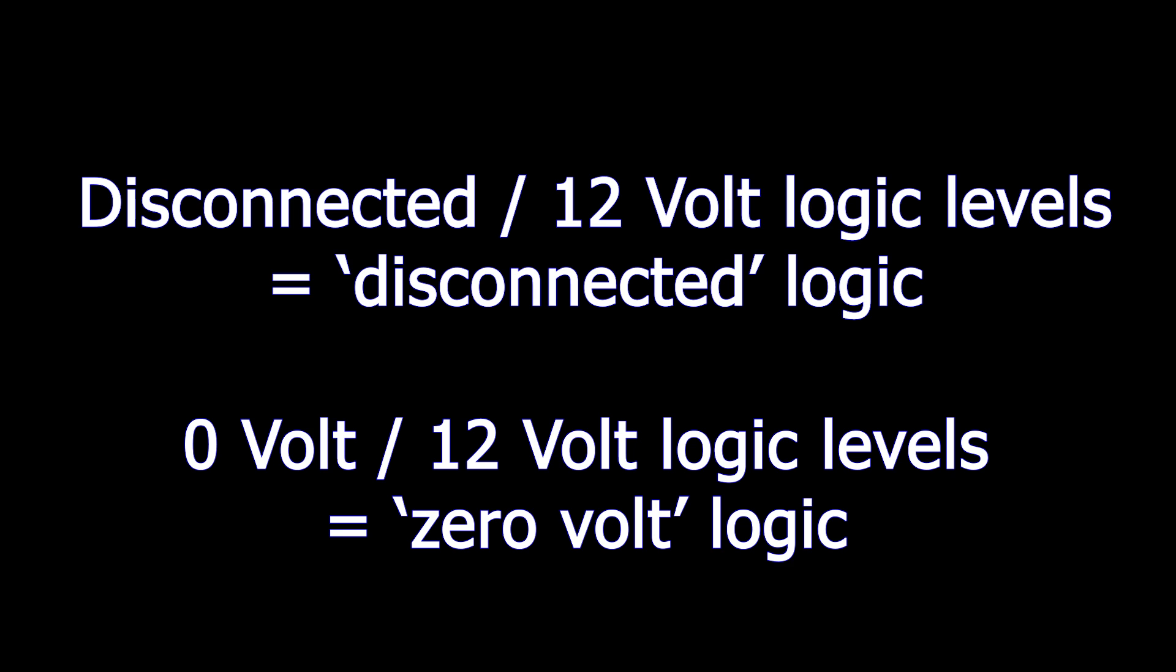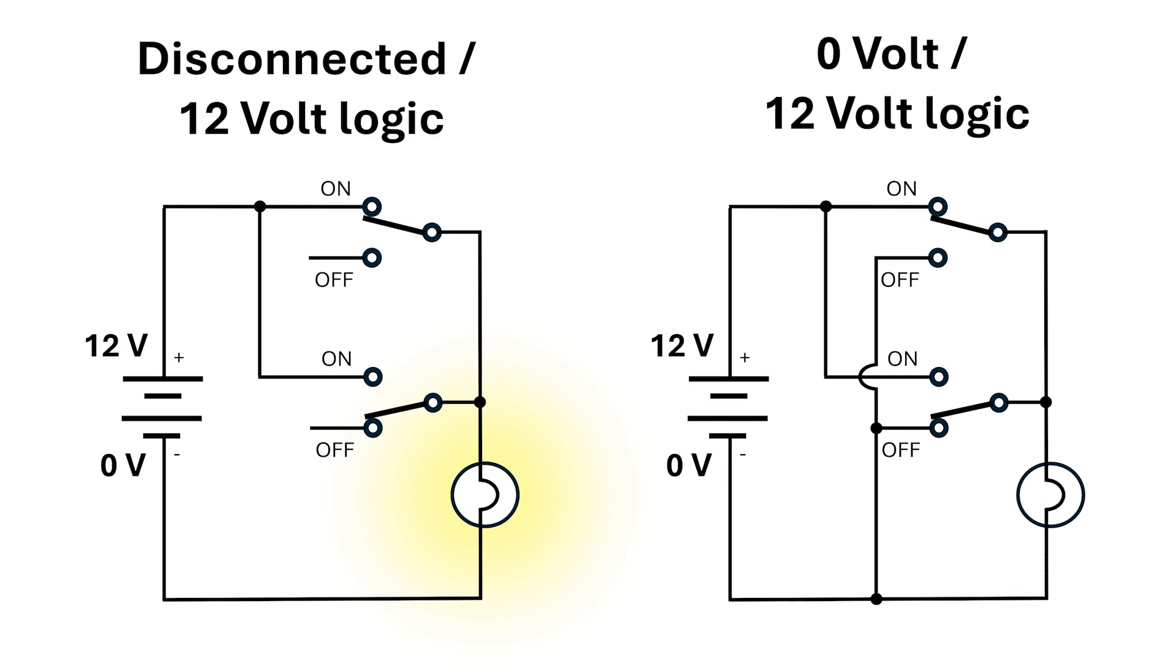For the disconnected logic, we get a path through the lamp, and it glows. For 0-volt logic, we get this alternative pathway of least resistance, which bypasses the lamp and actually causes a dead short across the terminals of the battery.